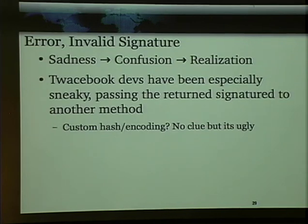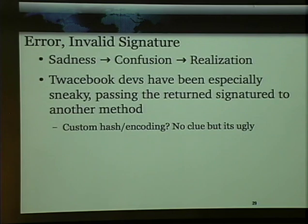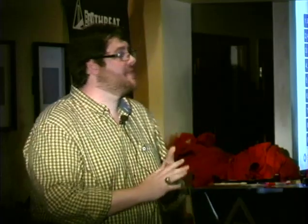But then sadness occurs and a lot of confusion, because these keys aren't creating the same signatures. And it took me quite a while to figure out why — it was really confusing because I had the secret key. The problem is these devs were extra sneaky and they passed their signature into another method that hashes it itself. So they're not really using OAuth anymore — they're doing a little custom sneaky stuff off to the side because they didn't want other people just stealing the keys and doing the dumb thing first. I commend them for that.